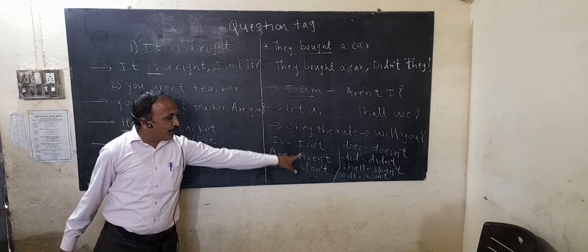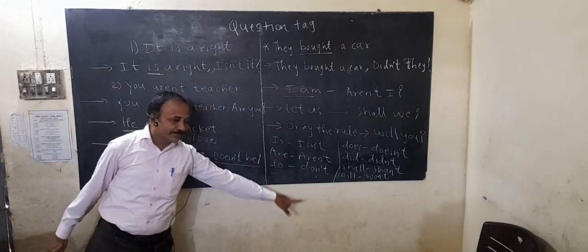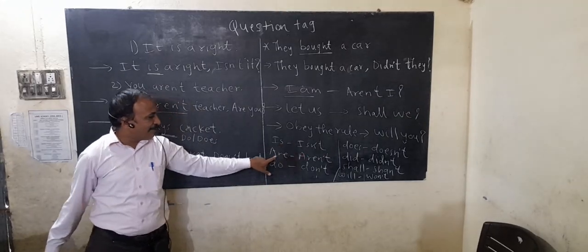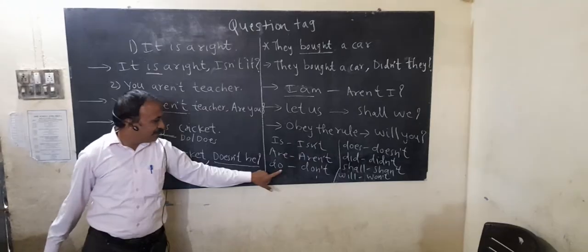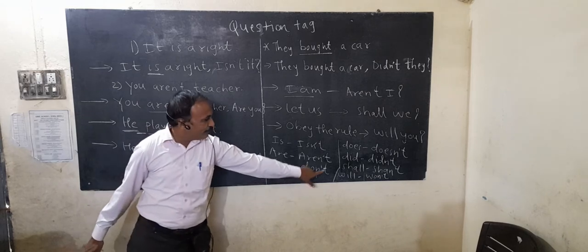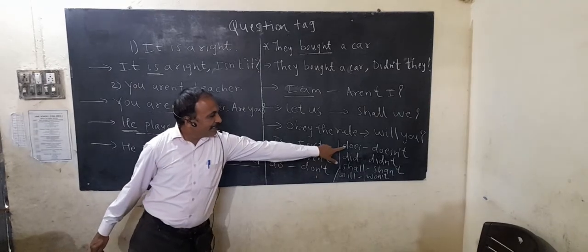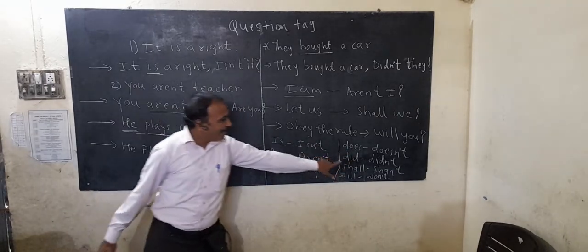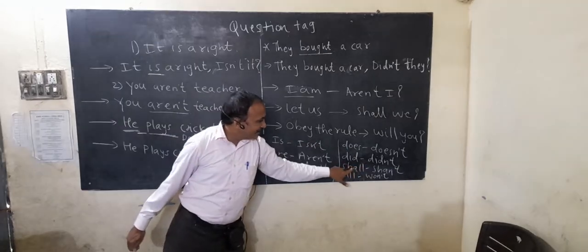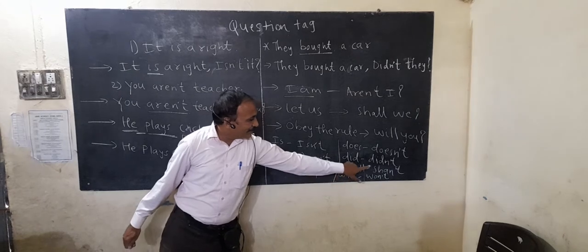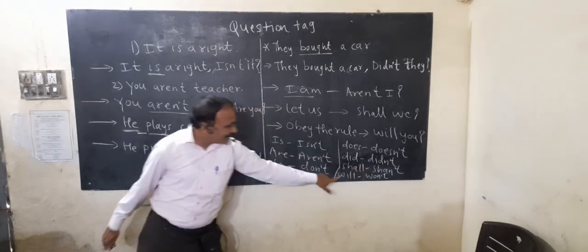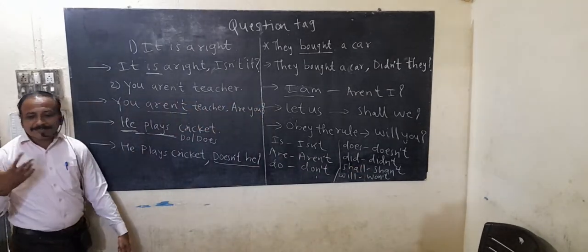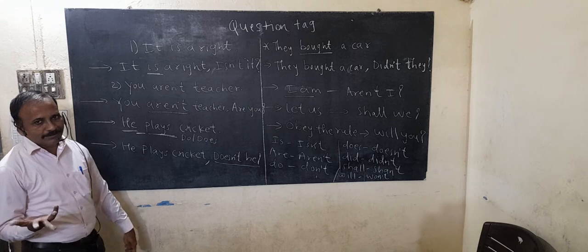If the statement is negative, the question tag comes positive. The structure follows: 'is' becomes 'isn't', 'are' becomes 'aren't', 'do' becomes 'don't', 'does' becomes 'doesn't', 'did' becomes 'didn't', 'shall' becomes 'shan't', 'will' becomes 'won't'. Let us take some examples.